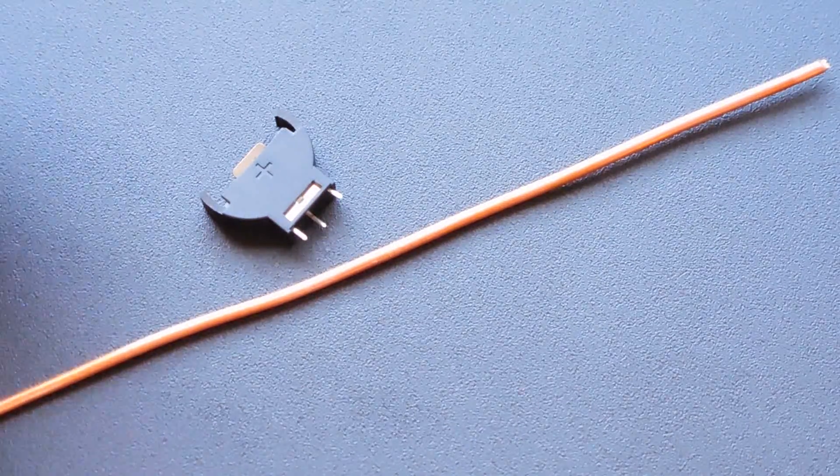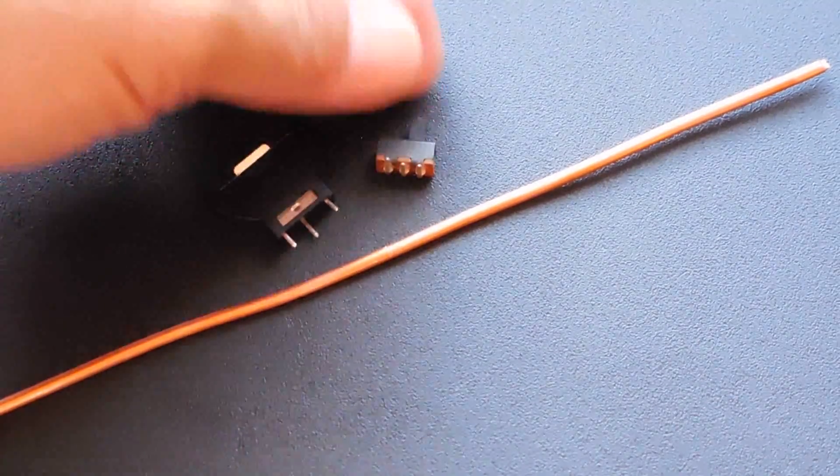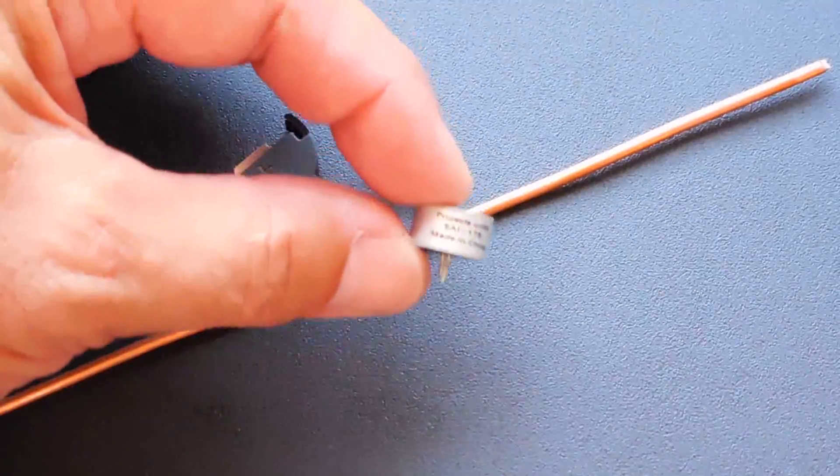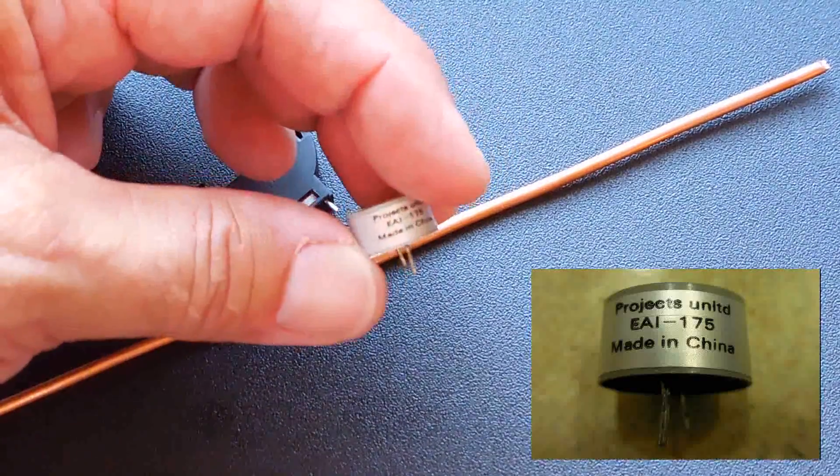A very tiny single pole double throw switch like you see right here. The piezo alarm looks like what you see right over here. I'll give you a close up of the number on it in a minute.